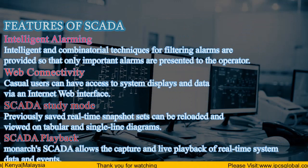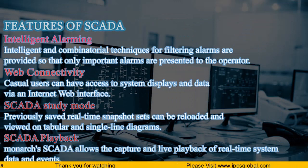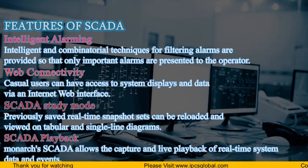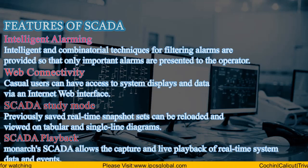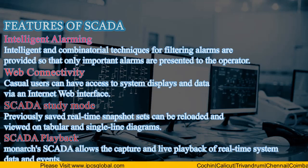So what are the features of SCADA? The first feature is Intelligent Alignment. Intelligent communication techniques for filtering alarms are provided so that only important alarms are presented to the operator.